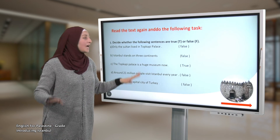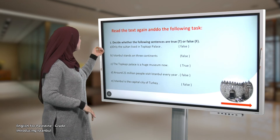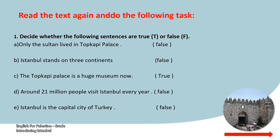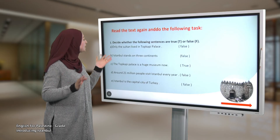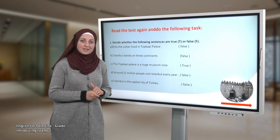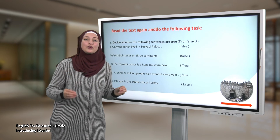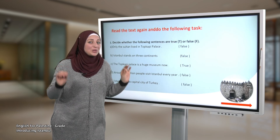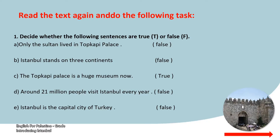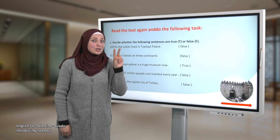Now we will read the text again and do the following task together. Number one: decide whether the following sentences are true or false. A: only the Sultan lived in Topkapi Palace — that is false. All the government members lived there. B: Istanbul stands on three continents — false. It stands on two continents, Asia and Europe.